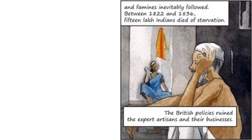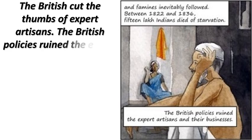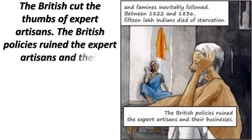Famines inevitably followed. Between 1822 and 1836, 15 lakh Indians died of starvation. The British policies ruined expert artisans and their businesses — the British even cut the thumbs of expert artisans to destroy their craft. This caused widespread misery across the country.